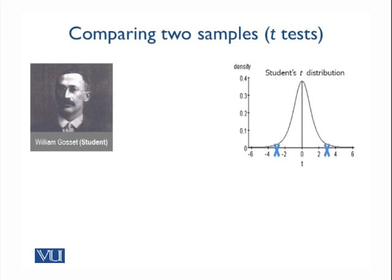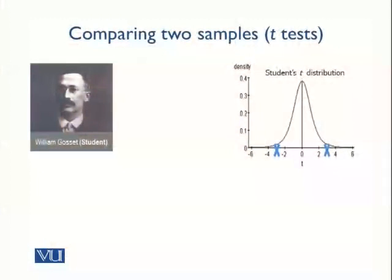Gossett proposed the T-distribution, which we have talked about in earlier sessions. It is like the normal distribution but more spread out. It was seen that if you want to estimate parameters from small samples, you cannot use the normal distribution — you have to use the T-distribution. The T-distribution is characterized by a degrees of freedom parameter, and if that parameter is large enough, the T-distribution is almost identical to the normal distribution. This degrees of freedom parameter is closely related to sample size.